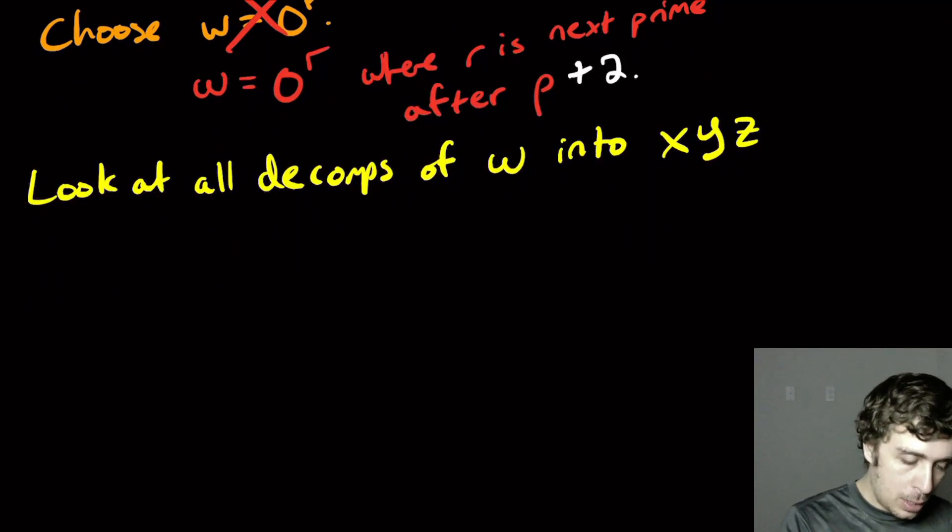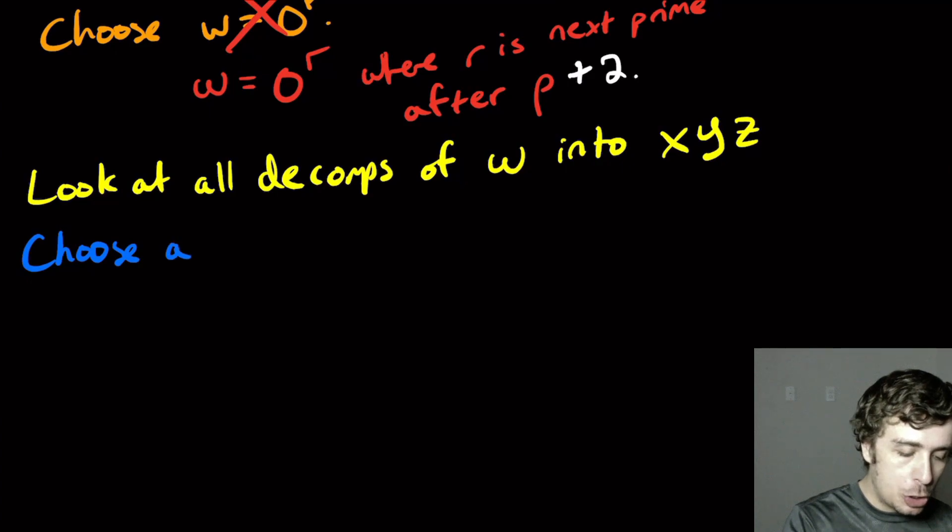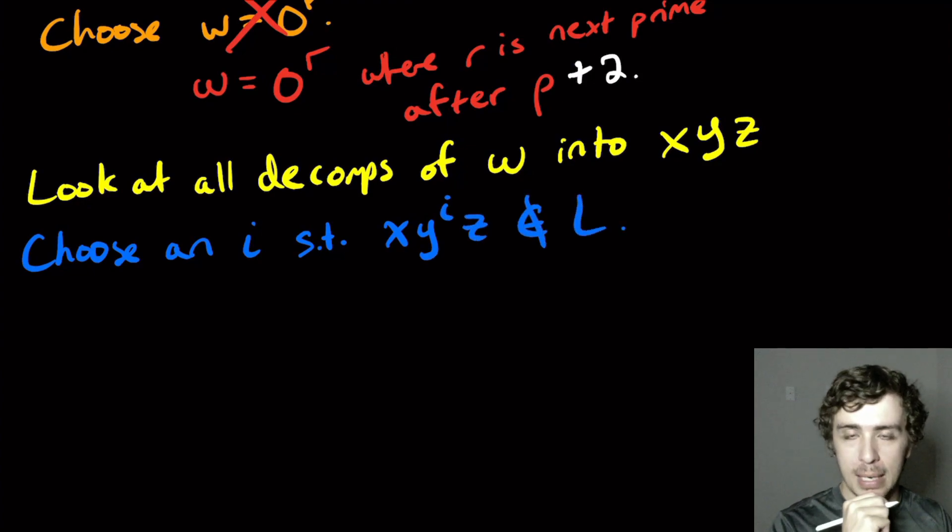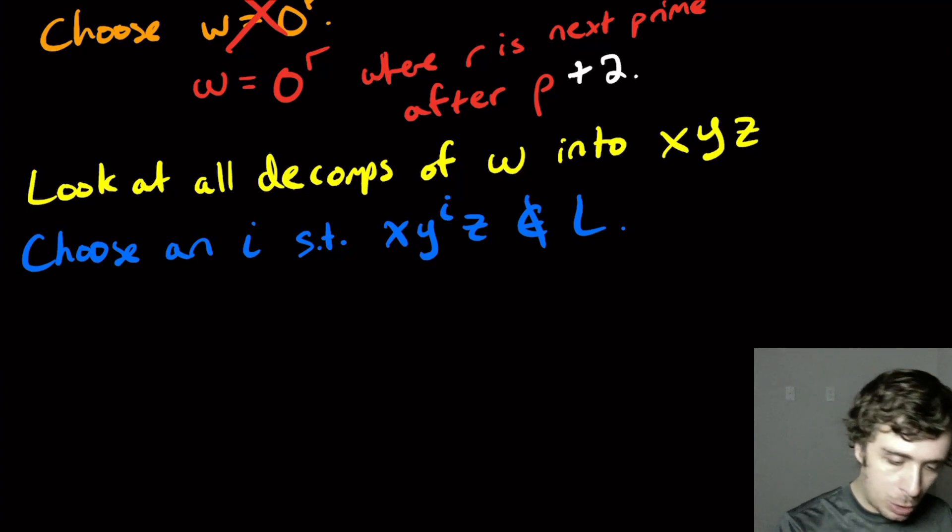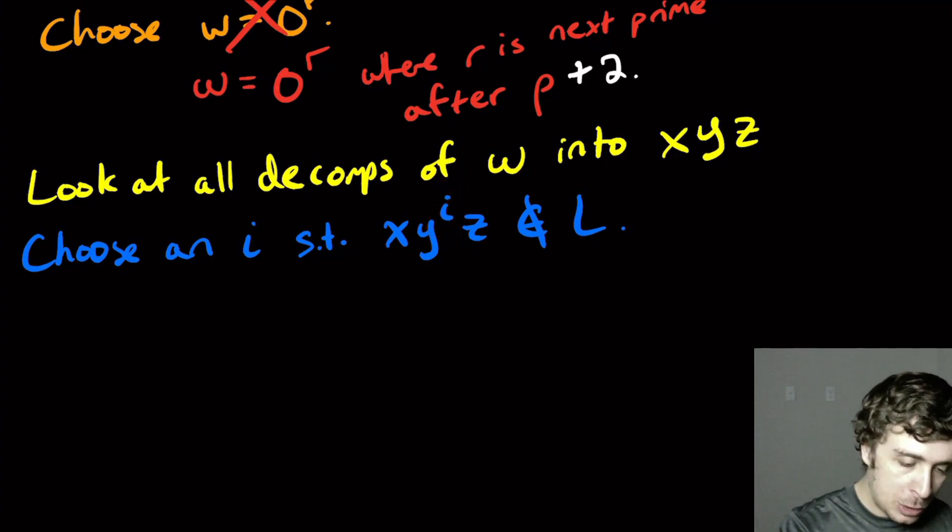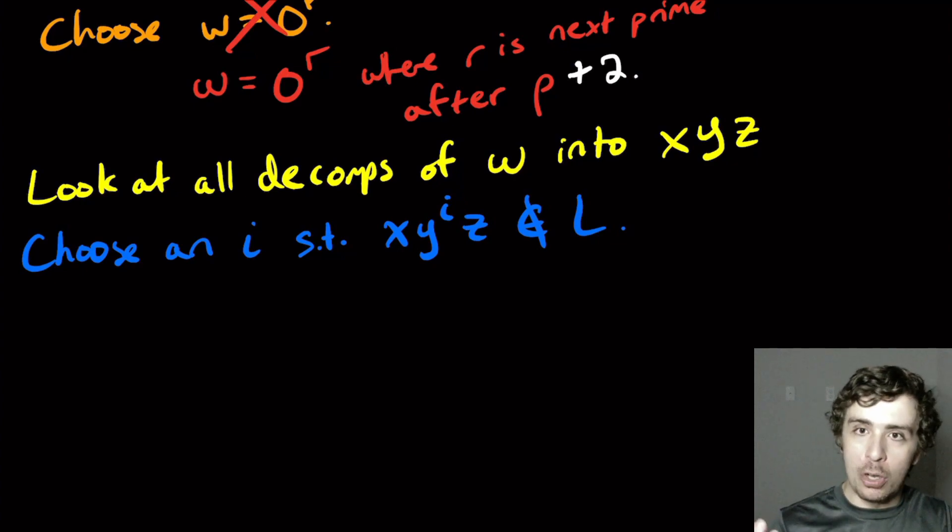So what we need to do is choose a value i such that x y to the i z is not in the language. We don't know what this length is, but we eventually need to exhibit an i for which it leaves the language.